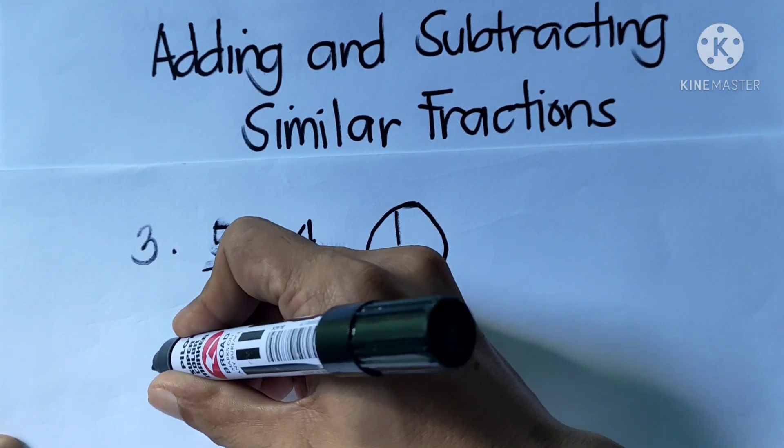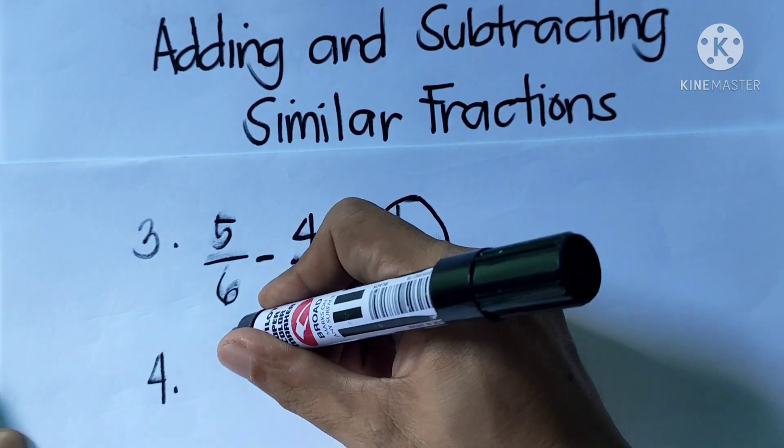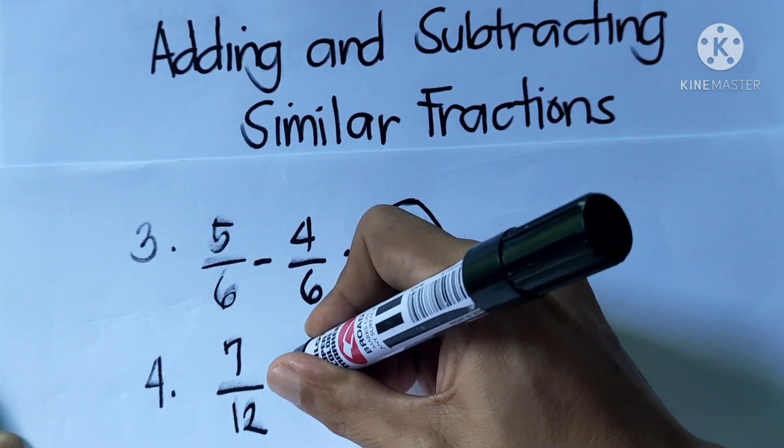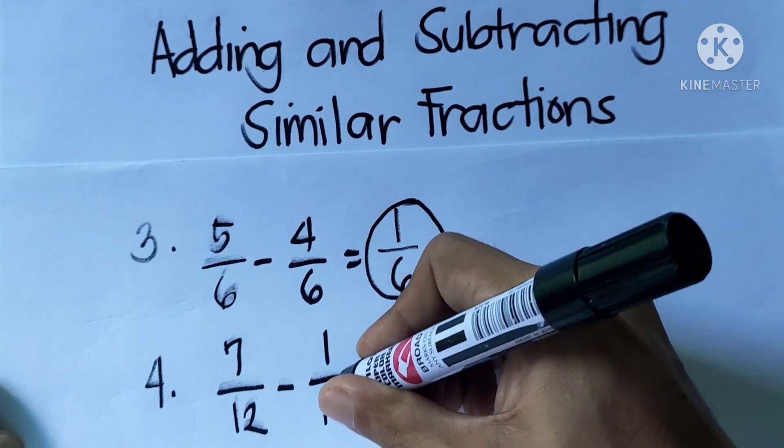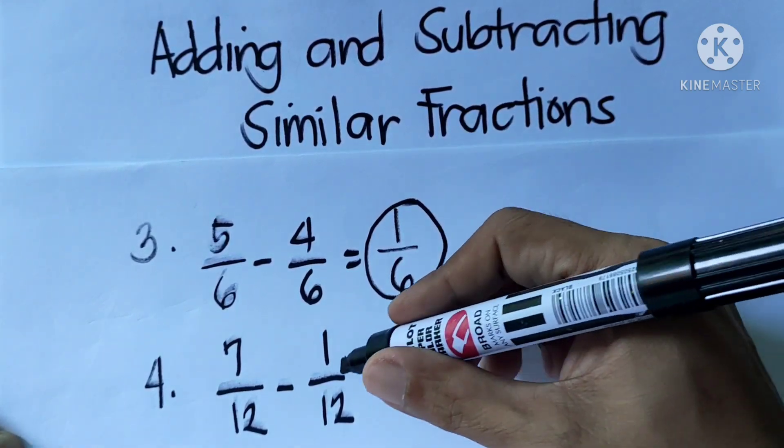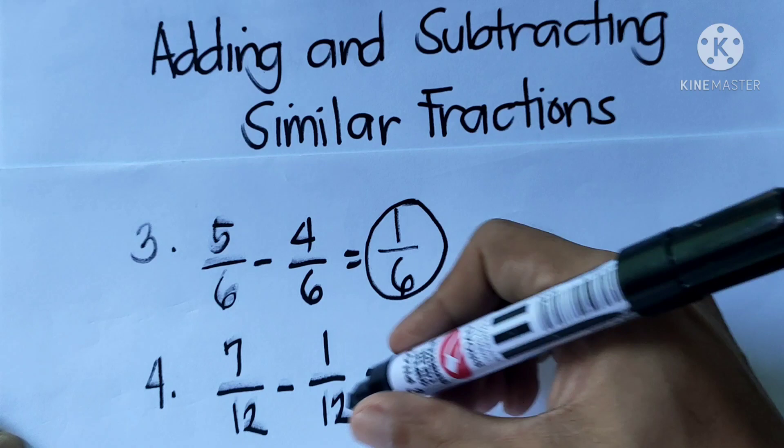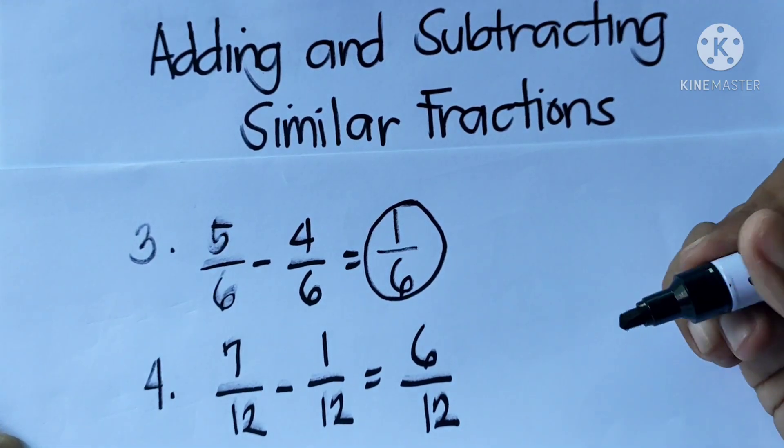Last example: 7 over 12 minus 1 over 12. So 7 minus 1 is 6. Then copy the denominator, which is 12. So the answer is 6 over 12.